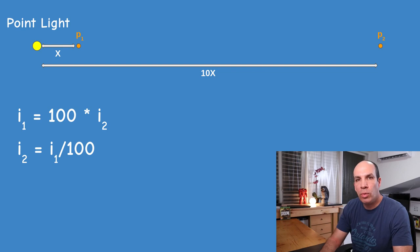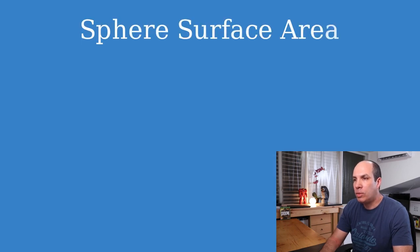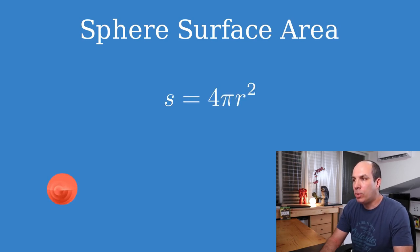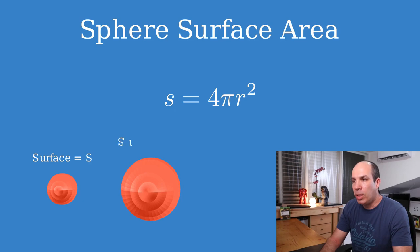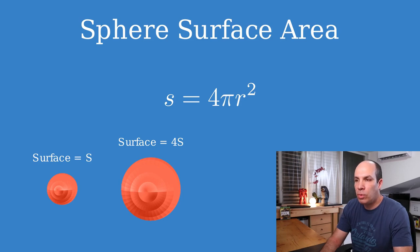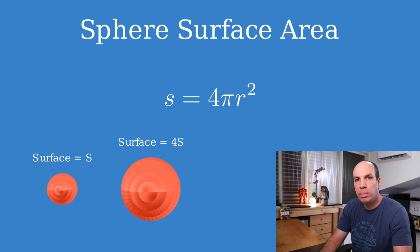The reason this is correct comes from the equation that says that the surface area of a sphere is 4 times pi times the square of the radius. If the radius increases by a factor of 2, the surface area increases by a factor of 4. This means that the same number of photons, which are elementary light particles, are distributed across a surface which is 4 times larger when the distance from the light source increases by a factor of 2.